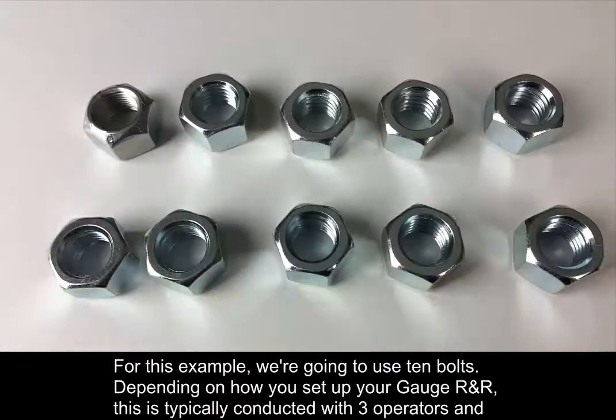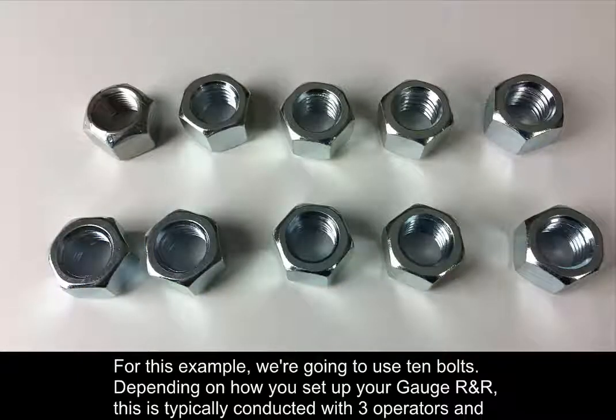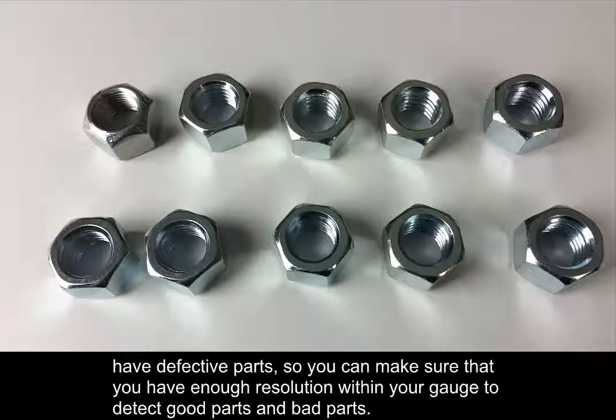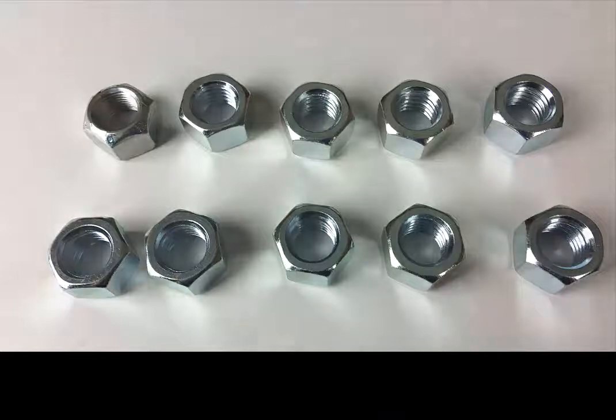For example, we're going to use 10 bolts. Depending on how you set up your gauge R&R, this is typically conducted with 3 operators and 10 parts. As you collect your 10 parts, it's very important to make sure that your 10 parts span the entire specification limits and you actually have defective parts, so that you can make sure that you have enough resolution within your gauge to detect good parts and bad parts.